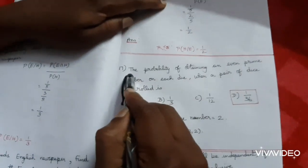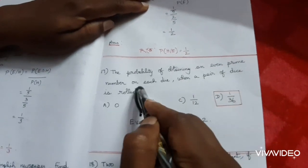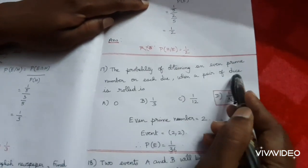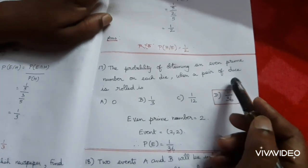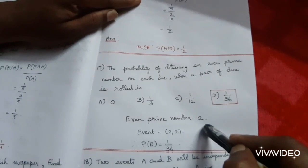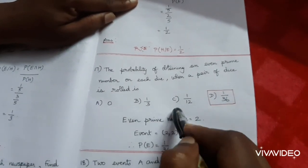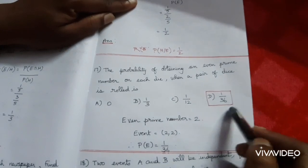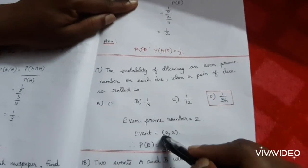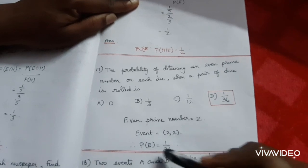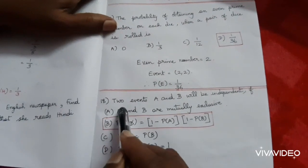Next problem: Find the probability of obtaining an even prime number on each die when a pair of dice is rolled. The only even prime number is 2. So the event is getting (2, 2). P(E) equals 1/36.